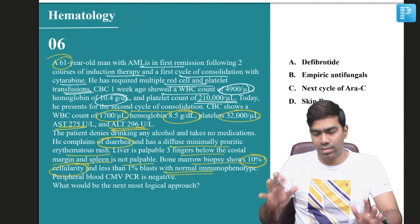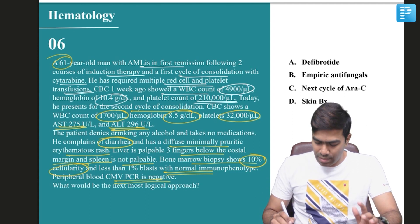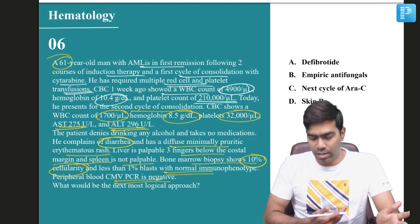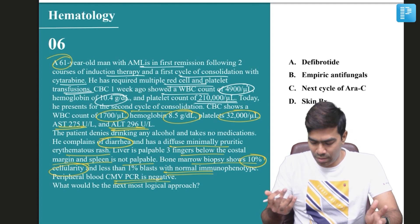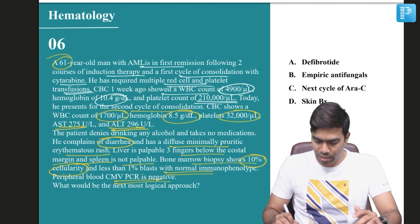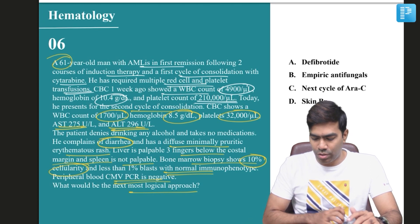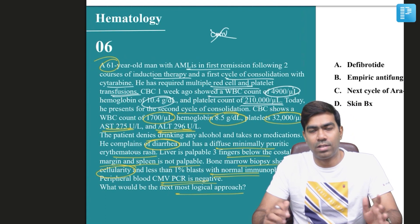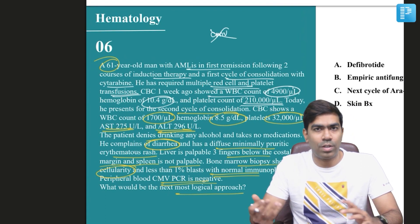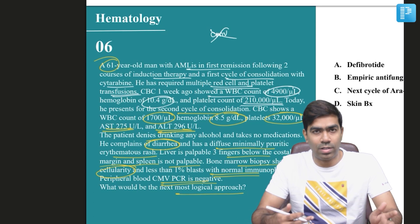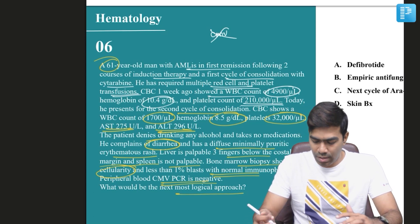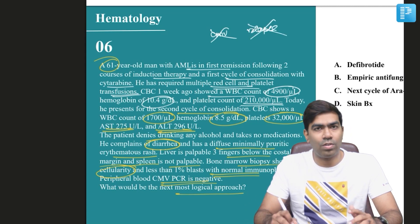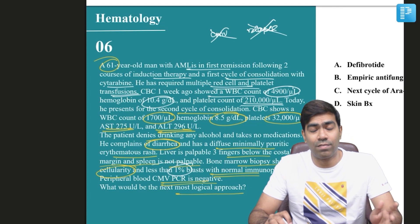Less than one percent blasts are present with normal immunophenotype, so this is not due to relapse of leukemia — anything less than five percent blasts is acceptable. Peripheral blood CMV PCR is negative, confirming that this pancytopenia and organ damage is not due to CMV infection or disseminated CMV infection. You have ruled out CMV-related pancytopenia and organ damage, and you have confirmed it is not due to relapse or refractory leukemia.